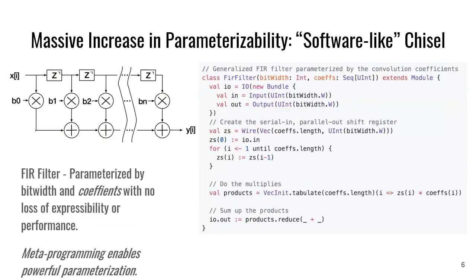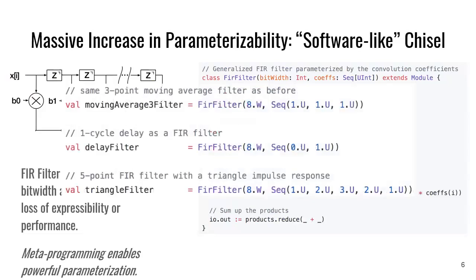This is how you can start to see things that look more like software-like Chisel, where we now add this additional layer of parameterization on top of our instance. Here I have a generic FIR filter, still parameterizing by the bit width, but I'm passing in a sequence of coefficients for what that FIR filter is doing. I can programmatically iterate over these coefficients and construct all the registers for delaying, tabulate them together, compute all the products, and then reduce and sum them all. With this, metaprogramming enables a powerful amount of parameterization. I can call this generic FIR filter and pass in sequences for a moving average 3 filter, a delay filter, a triangle filter — all with the same code. This is the power that Chisel enables: writing these generic generators that capture design patterns.